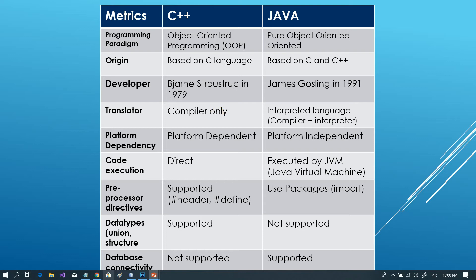But in Java, we have a two-step translation system: first compilation, then interpretation. So in Java there are two steps in the execution process.